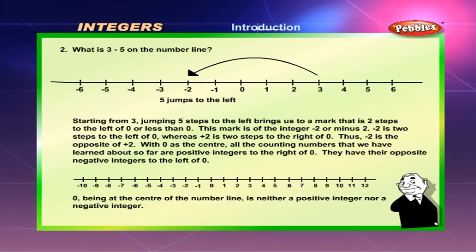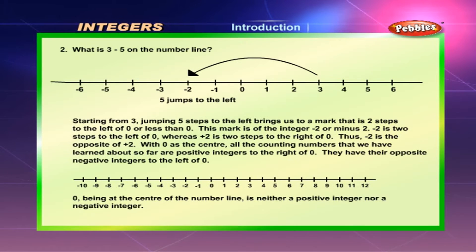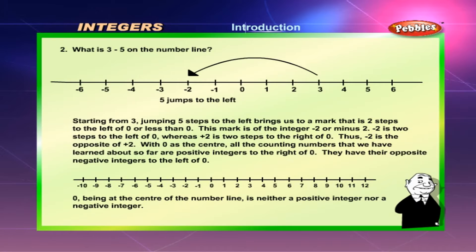This mark is the integer minus 2. Minus 2 is 2 steps to the left of 0, whereas plus 2 is 2 steps to the right of 0. Thus, minus 2 is the opposite of plus 2. With 0 as the centre, all the counting numbers learned so far are positive integers to the right of 0. They have their opposite negative integers to the left of 0. Zero, being at the centre of the number line, is neither a positive integer nor a negative integer.